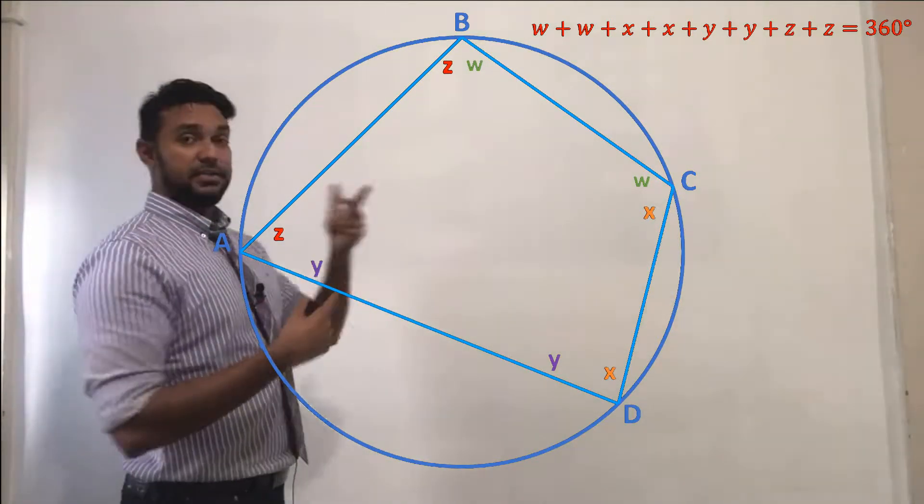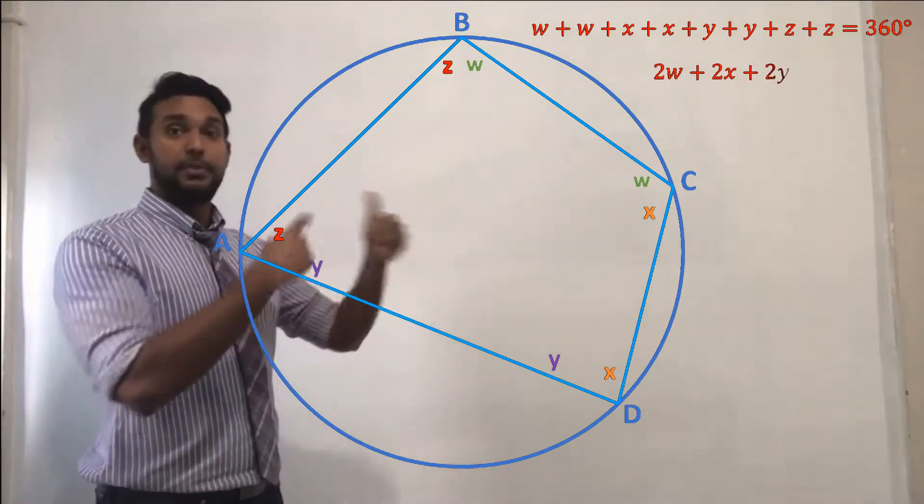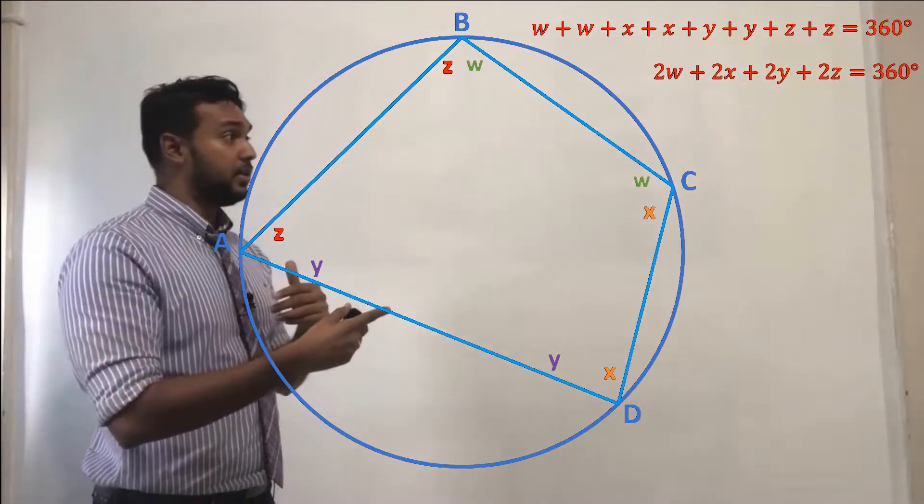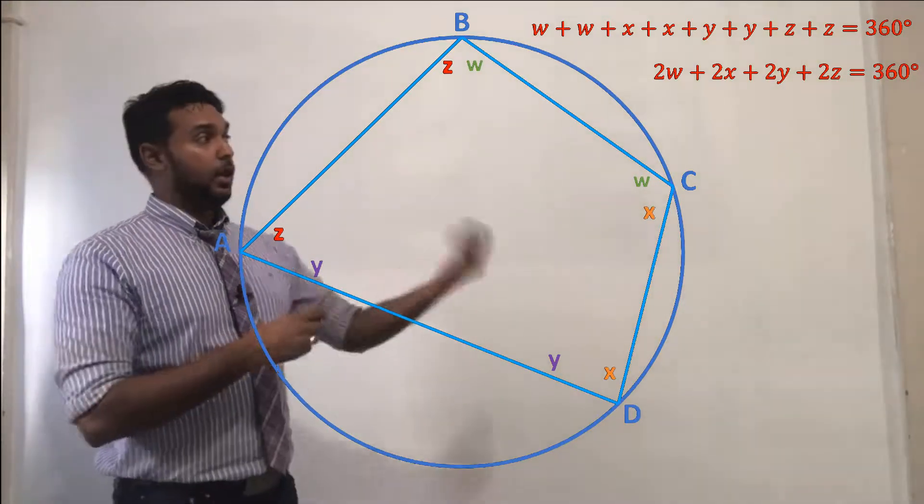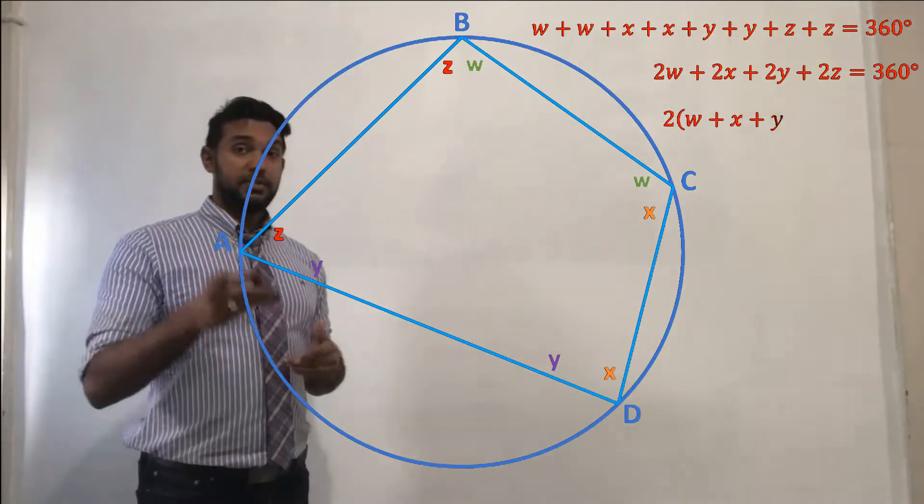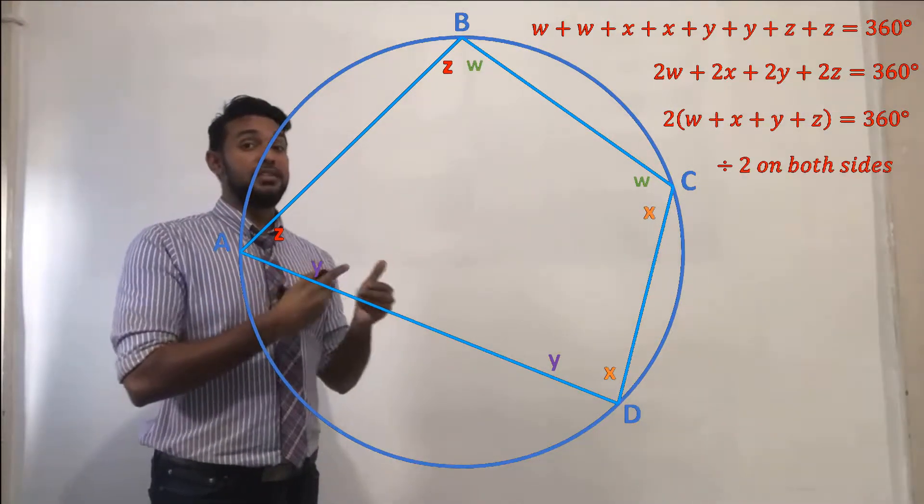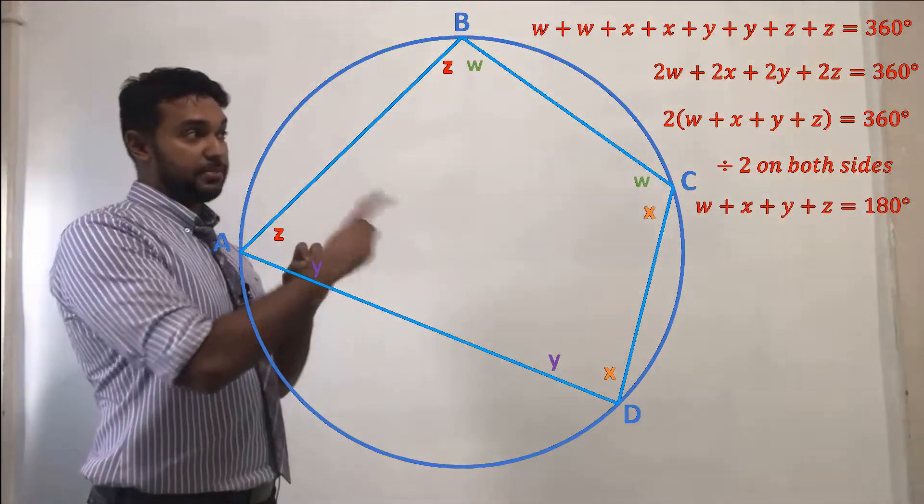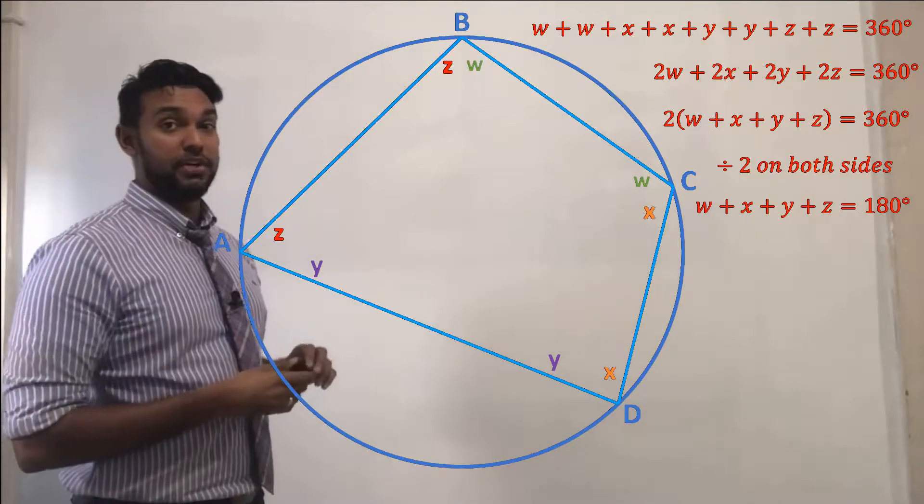On top of which, we have 2W, 2X, 2Y, 2Z. So that's still going to be equal to 360. We'll factorize out the two just to make sure that when we divide by two, it's easy to see that W plus X plus Y plus Z is equal to 180 degrees.